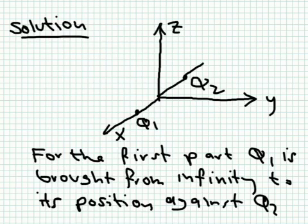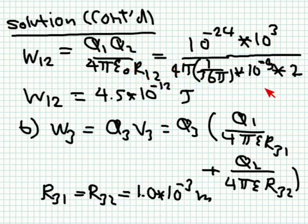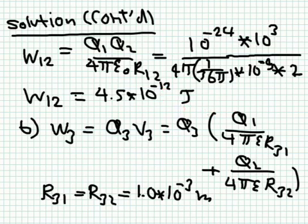The work to assemble q1 and q2 is q1·q2 over 4πε·r. Substituting: q1 = 10⁻¹², q2 = 10⁻¹², so the numerator is 10⁻²⁴. For 4πε, we use 1 over 36π × 10⁻⁹. The distance r between the charges is two millimeters, so r = 2 × 10⁻³ m. Simplifying all terms: 9 divided by 2 gives 4.5, and combining powers of ten gives 4.5 × 10⁻¹² joules. This is the work needed to bring q2 from infinity against the field of q1 and place it two millimeters away.